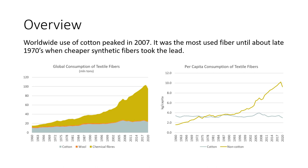Use of cotton has been growing at 1.4 percent annually during 1960–2020. Its consumption peaked in 2007 but has been on a slight decline since then. It was the most used fiber until about the late 1970s, when cheaper synthetic fibers took the lead. In per capita terms, global consumption of cotton decreased between 1960 and 2020 by 12 percent. In contrast, use of non-cotton fibers increased by 484 percent between 1960 and 2020.